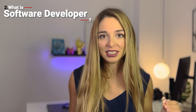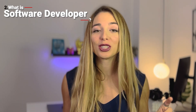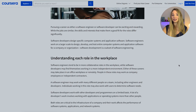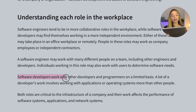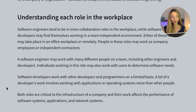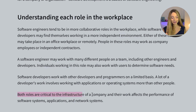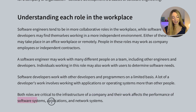Software developers: to be fair, the software engineer description fits quite well for the software developer. I found a Coursera blog about it. They describe software developers as working with other developers and programmers on a limited basis, with a lot of their work involving applications or operating systems more than other people. Both roles — software engineer and software developer — are critical to the infrastructure of a company, and the work affects the performance of software system applications and network systems. I'm not sure I can see the difference.